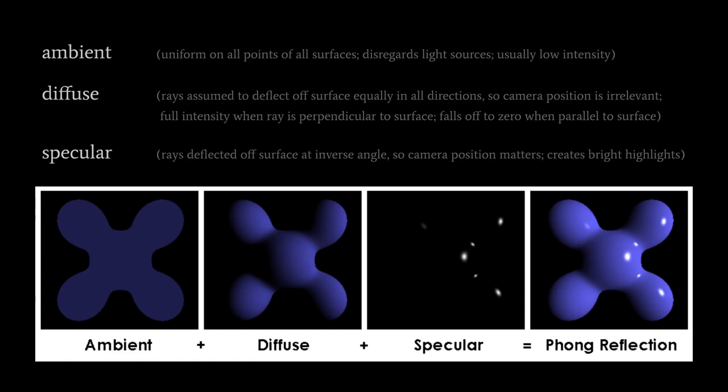How you determine the ambient light level can be as simple as having an environment artist hard-set it. In more sophisticated schemes you might dynamically compute it from the number and intensity of lights, or vary it across different parts of the environment. But when rendering a model, the ambient component is simply a color passed in — no further calculation needed.